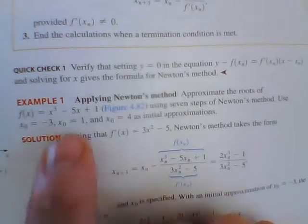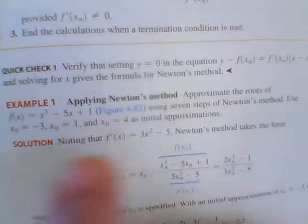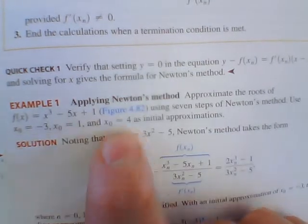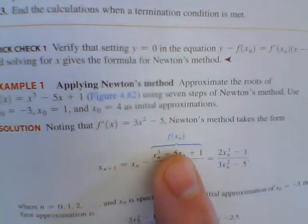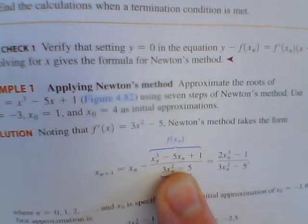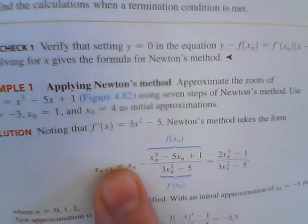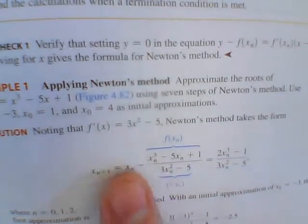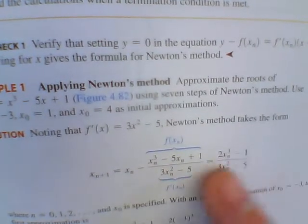So here, just kind of briefly looking at an example that they give us, they talk about x cubed minus 5x plus one, and they tell us negative three, one, and four are some initial approximations. So what we do is we have our initial function, and then we have the derivative of that function. Then what we do is we simplify it, so we'll multiply this here, add, subtract, distribute the negative three, simplify this down to get this function right here.